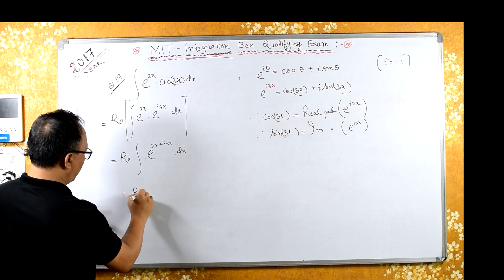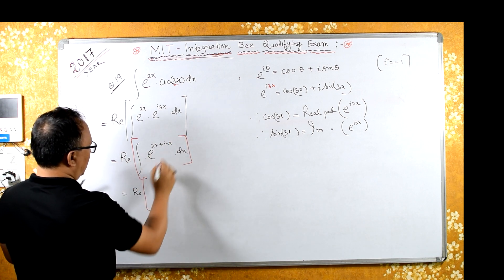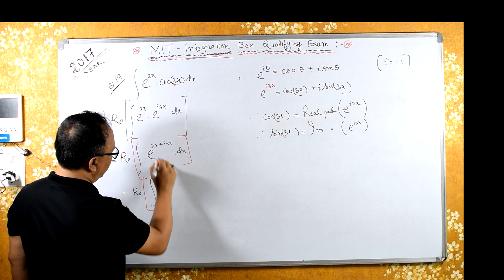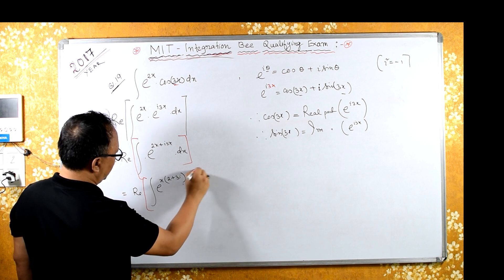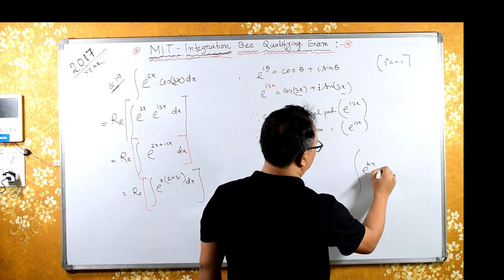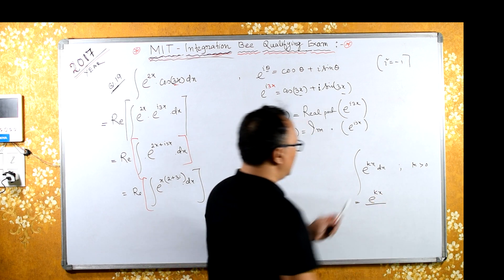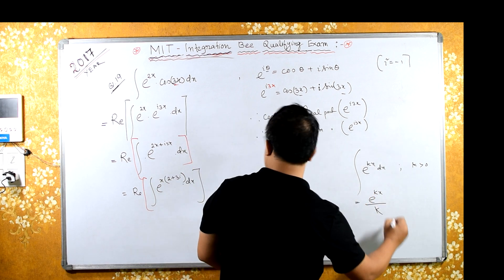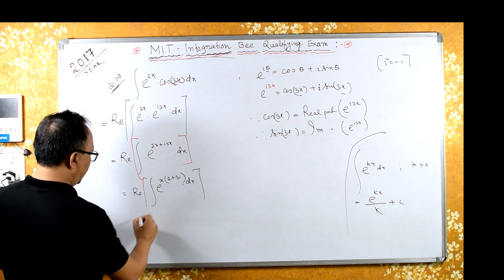This is the same as the real part of the integral of e raised to (2 + 3i)x dx, taking x common. We have the standard formula: integral of e^(kx) dx equals e^(kx) divided by k, plus a constant, where k is a constant strictly greater than 0.